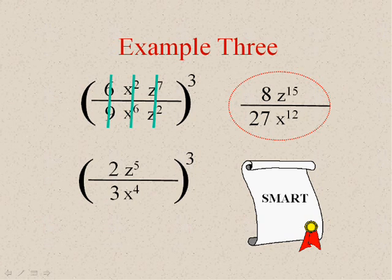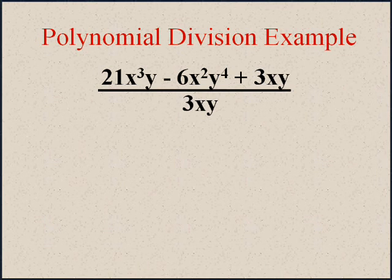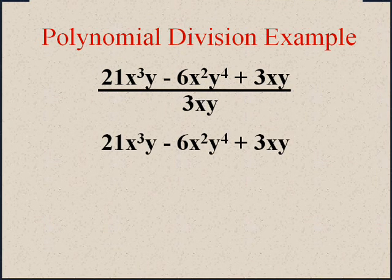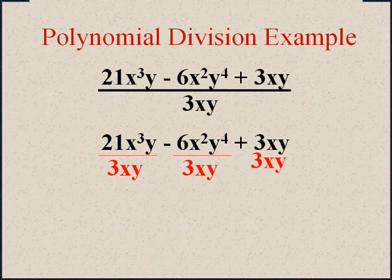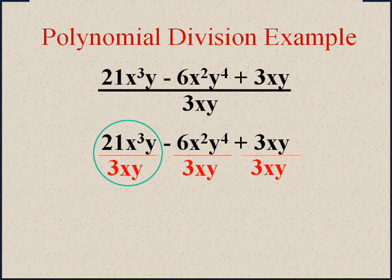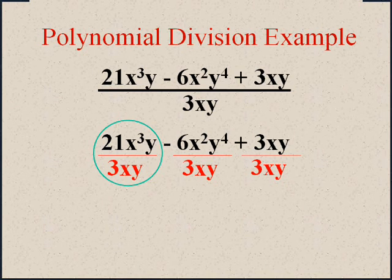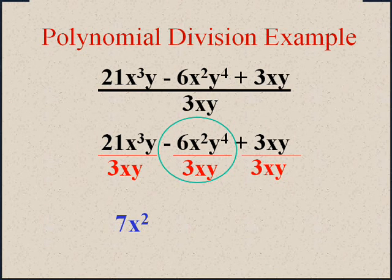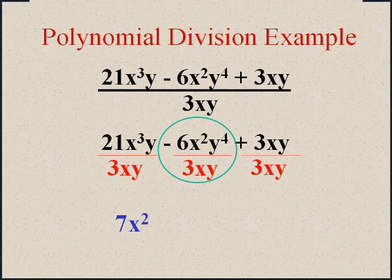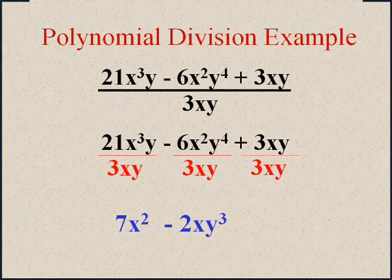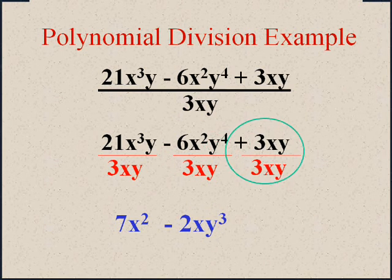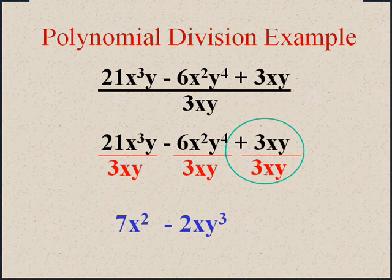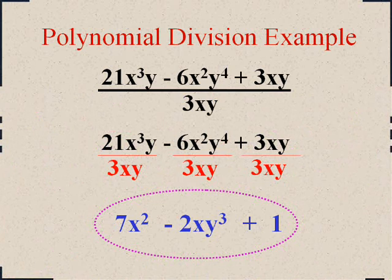Now, they may bunch these together into one problem. Something like this. But I want you to understand that it really is three little problems. And then I just do them separately. This one, twenty-one divided by three is seven. x to the third divided by x to the one is x to the twelfth. And the y's cancel. So I get seven x squared. This one, six divided by three is two. x to the second divided by x is x. And y to the fourth divided by y is y to the third. So we end up with negative two x y to the third. And then finally, when everything cancels, what happens when everything cancels? Well, think of it this way, anything over itself, what does it equal? One. Don't forget that one. Here is today's final Jeopardy answer.